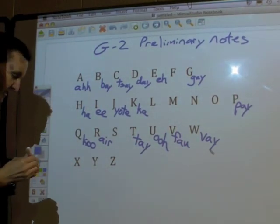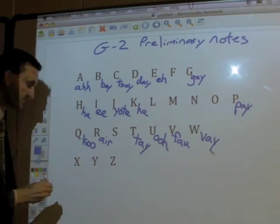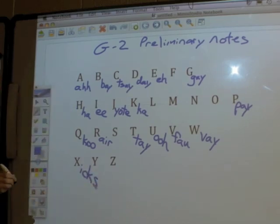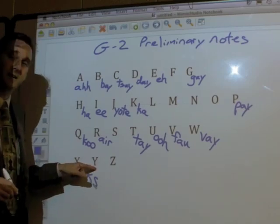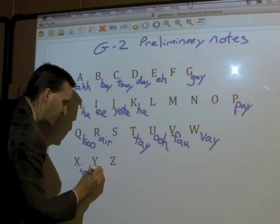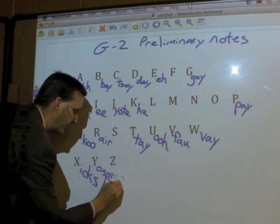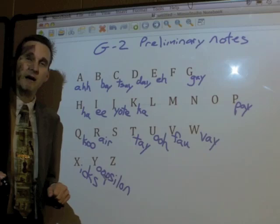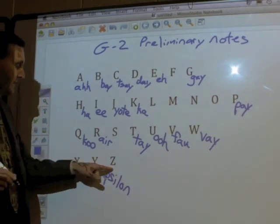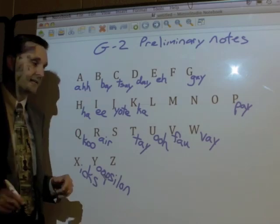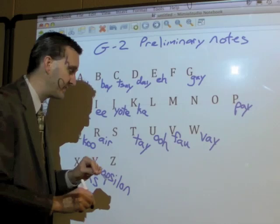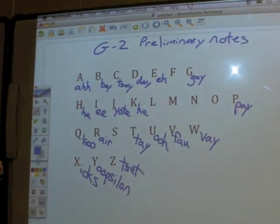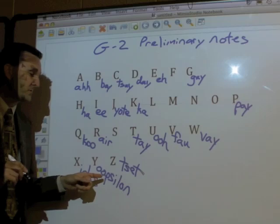And these last three: X is 'iks' — like 'ik' with an S at the end. Y is 'Ypsilon' — U-P-S-I-L-O-N, from the Greek letter epsilon. And this final one is 'tset' — it's like I'm going to set something down, but there's a slight T sound in front of it, so T in front of 'set'. So: iks, Ypsilon, tset.